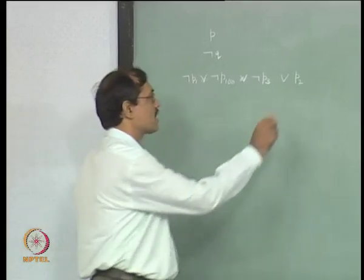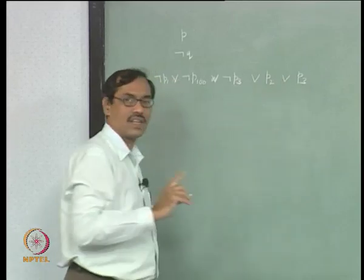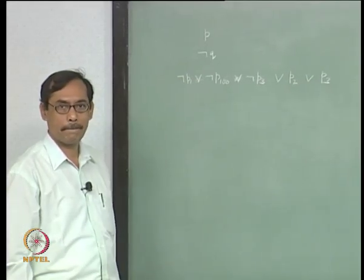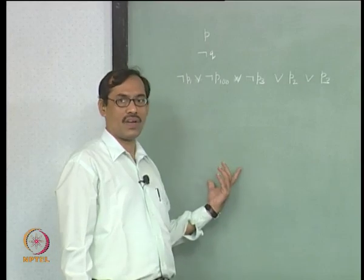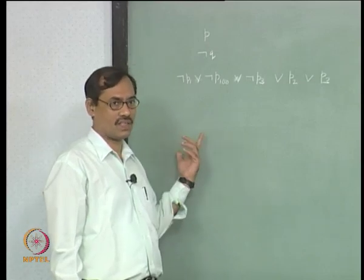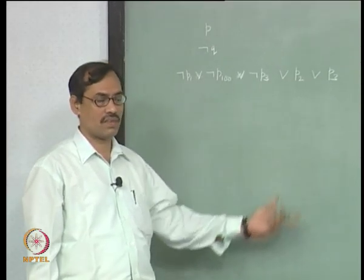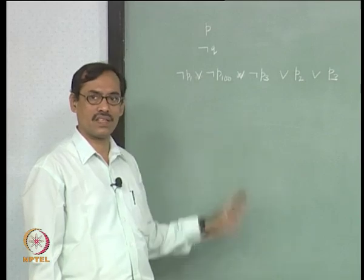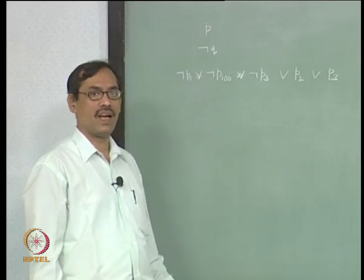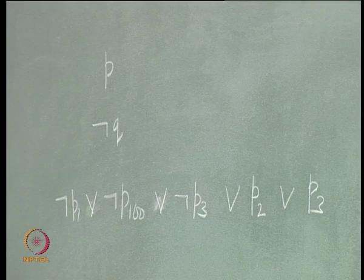But if you take another variable which is unnegated, this is not a HORN clause. A HORN formula will be a conjunction of HORN clauses. Each HORN clause is a disjunctive clause where at most one is unnegated; all others should be negated.